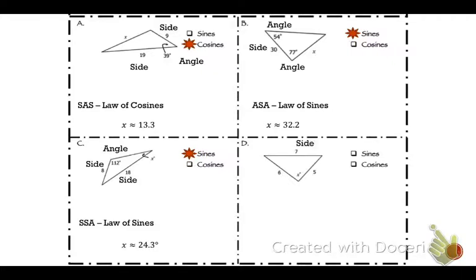Last one, we have side-side-side, which is SSS, which is law of cosines. And solve for that angle, you get 78.5.